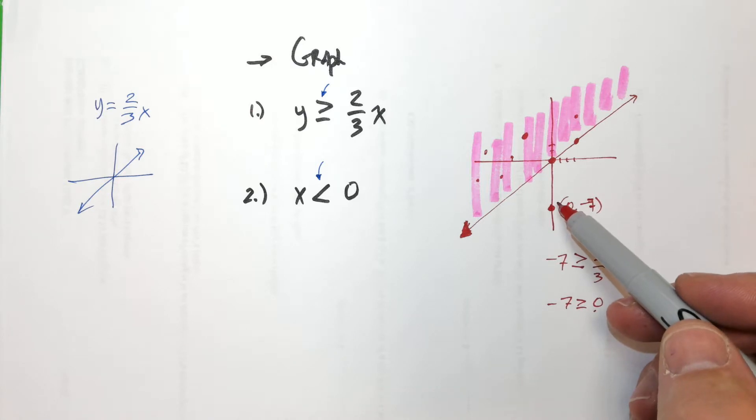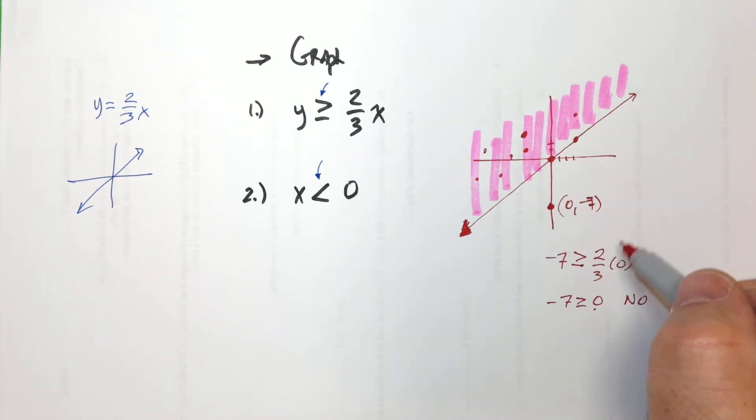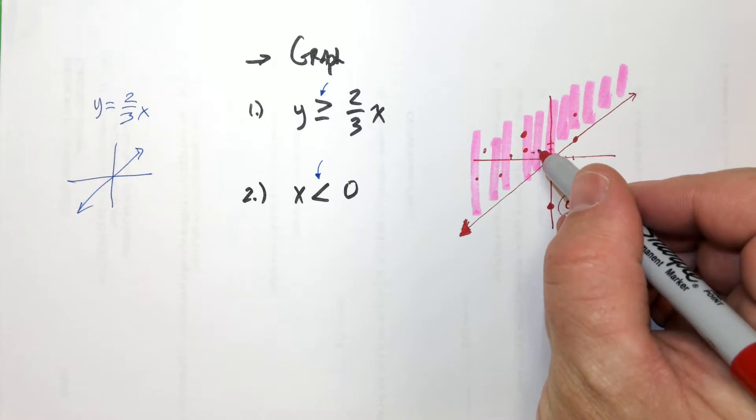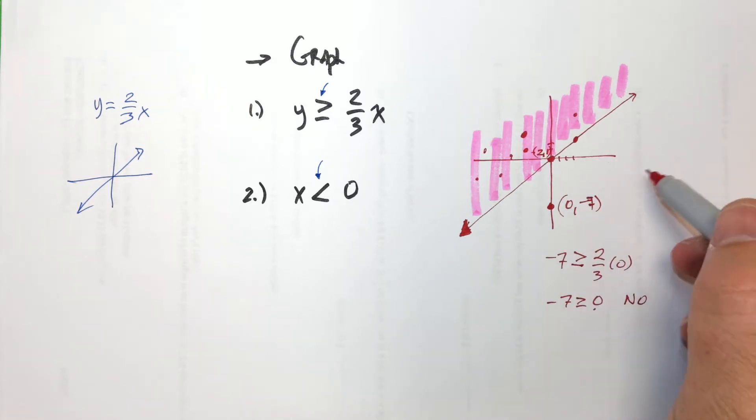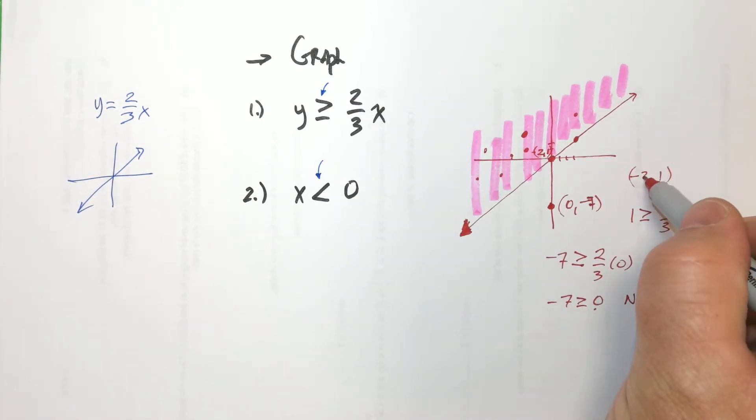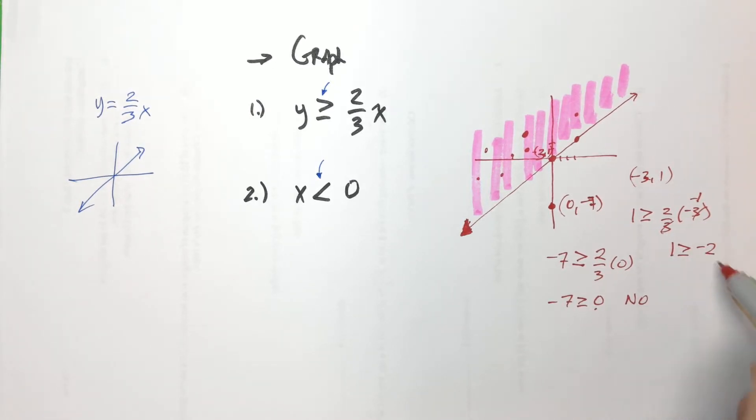But if I pick this point, like right here, like let's say that was negative three, one. So if I plugged in negative three, one into this inequality, I'm going to pick negative three because then it's going to reduce. Right? Then that makes one is greater than or equal to negative two, and that's true.